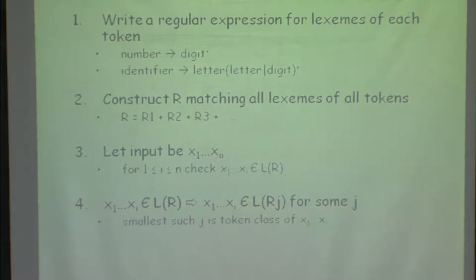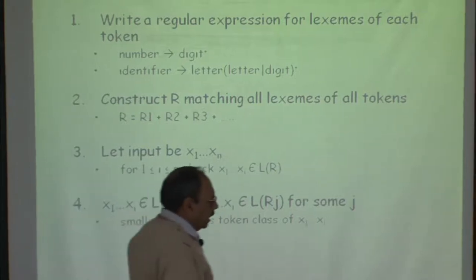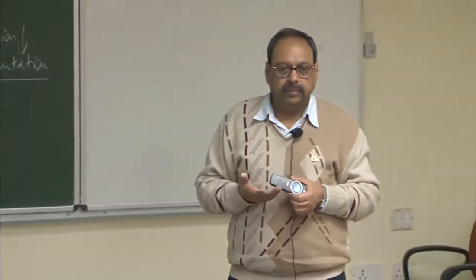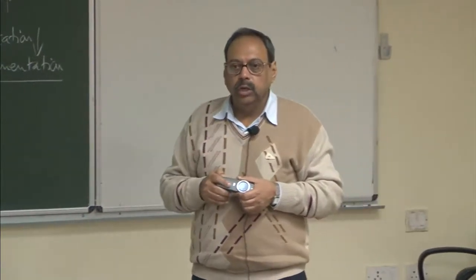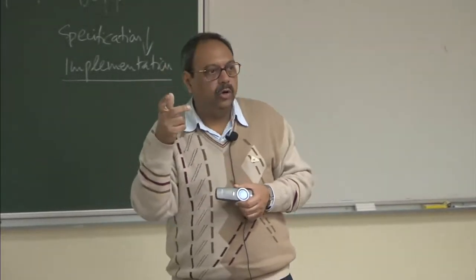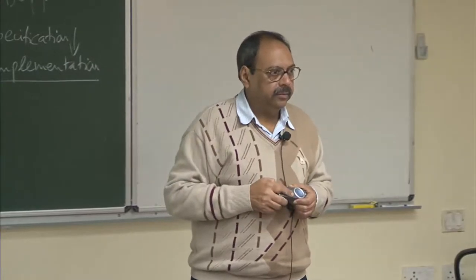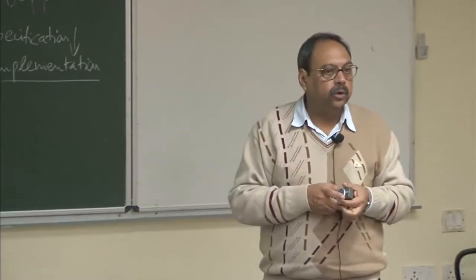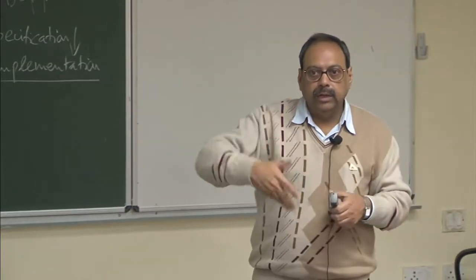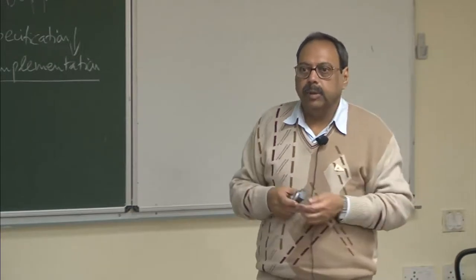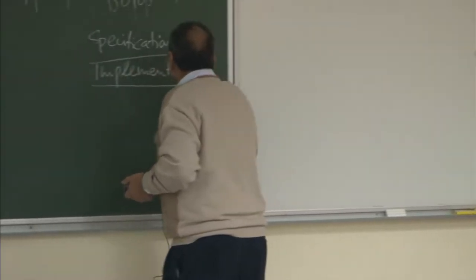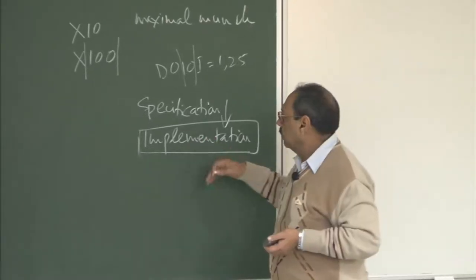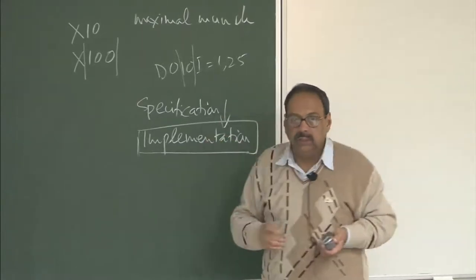For example, coming back to what you already saw in Lex: if I give an order where keywords come later than identifiers, then every keyword will also be matched by the identifier rule. But if keywords come first, you will first try to match the keyword rule, and only if it does not match or there is a longer match, it will go to identifier. So order matters. Different tools give different ways of ordering. If you do not use a tool and write a C program, you have to worry about what order you use — that becomes part of your implementation. You have to worry about when to stop and when you have reached the word boundary.